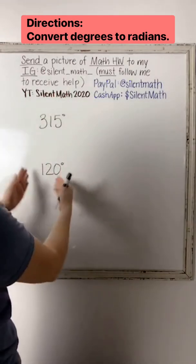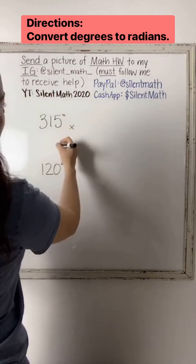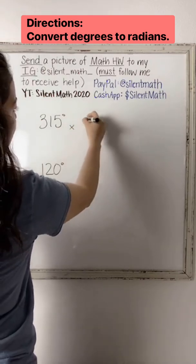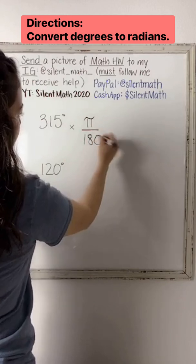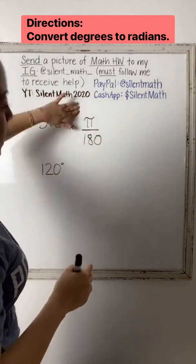You want to go from a degree to a radian, we're always going to multiply by pi over 180. So it's either two things, either you're going to be multiplying by pi over 180 or 180 over pi.